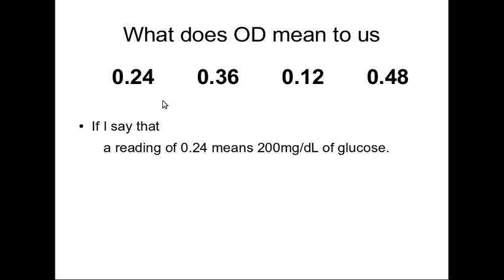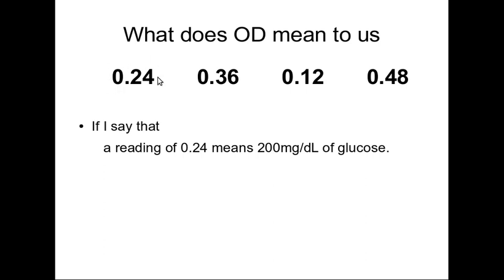Suppose I say that a solution with an optical density of 0.24 has a concentration of 200 milligrams per deciliter. Then I get a lot of information. I can say that the solution with OD 0.48 has a concentration of 400 mg/dL, the one with OD 0.12 is 100 mg/dL, and the one with OD 0.36 is 300 mg/dL. Once I know the concentration for a known OD, I can calculate the concentration of all other solutions.